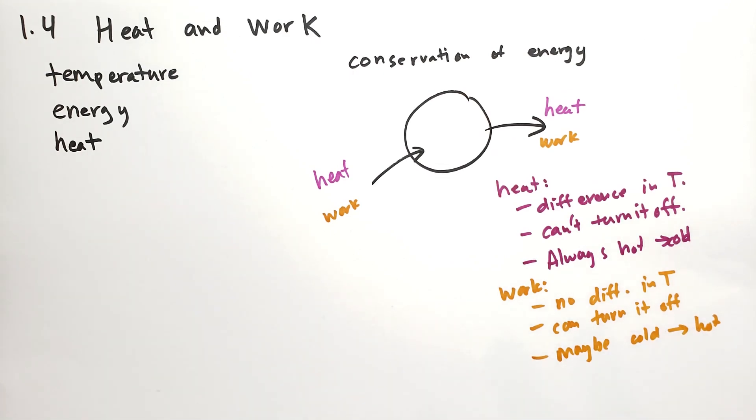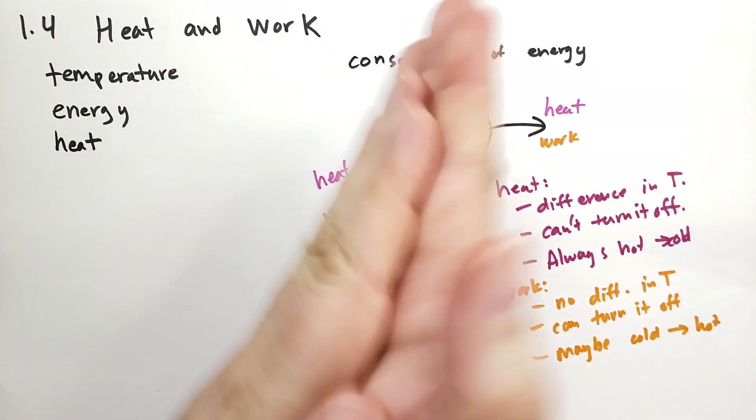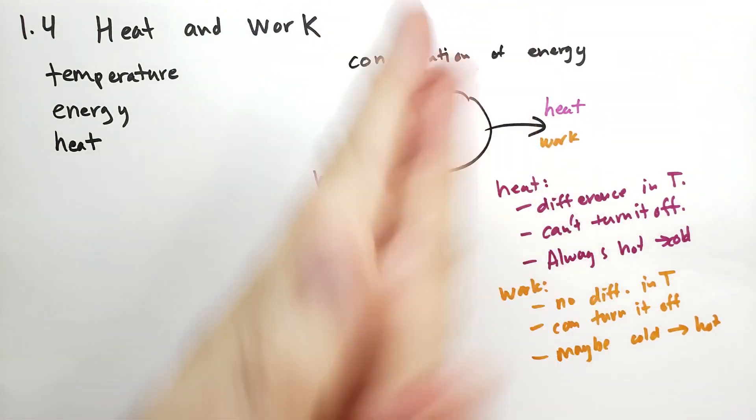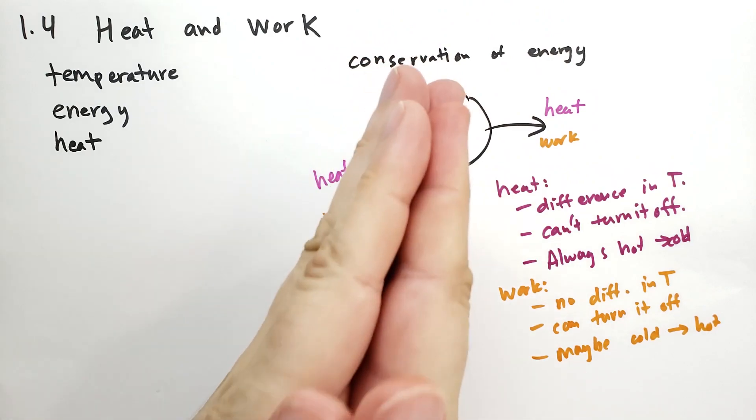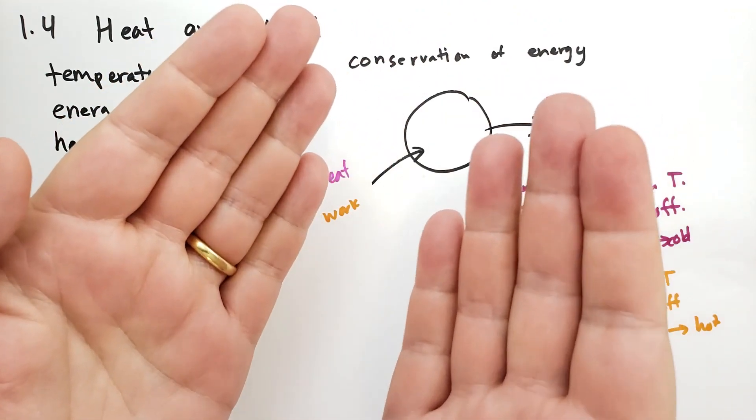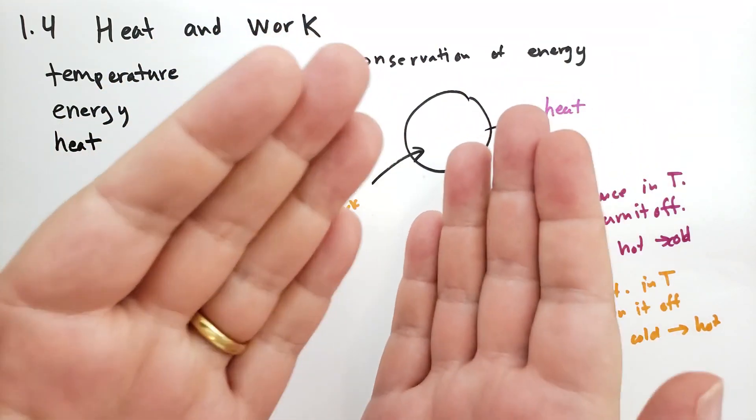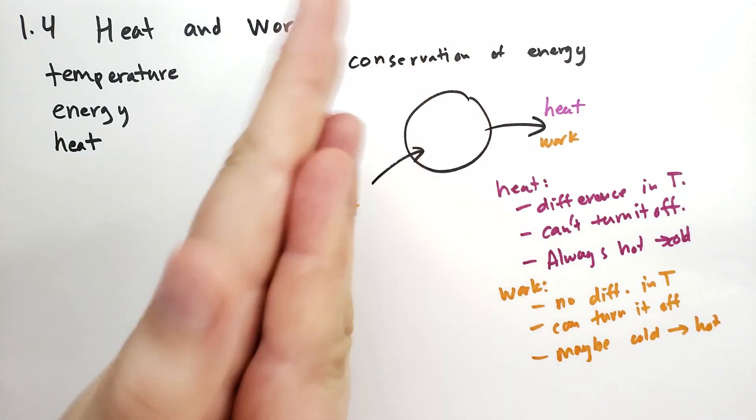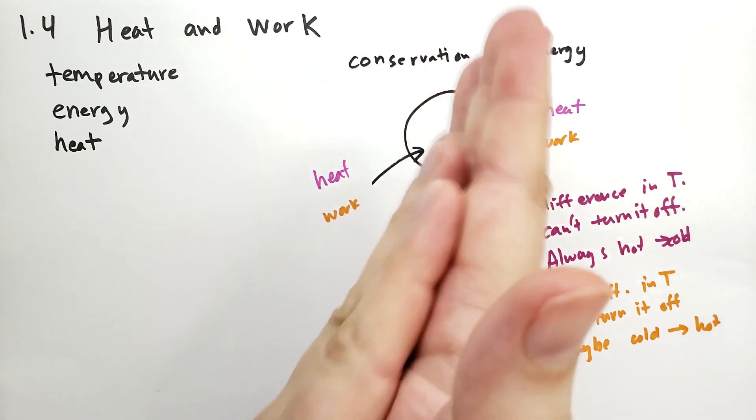One of the difficulties we have in thermodynamics is the word heat is overused in the English language. It means something different than what it means in our physics context here. So, for instance, I might say I take my hands and I rub them together. I push together and rub together. And I say I'm heating my hands. But in reality, this is not heating. Because the hands themselves are getting hotter than they already were. So we're not seeing a flow from hot to cold. And also, I can stop rubbing my hands and they stop getting hot. And so it's something that I can control. So this is actually a form of work. It's due to friction.